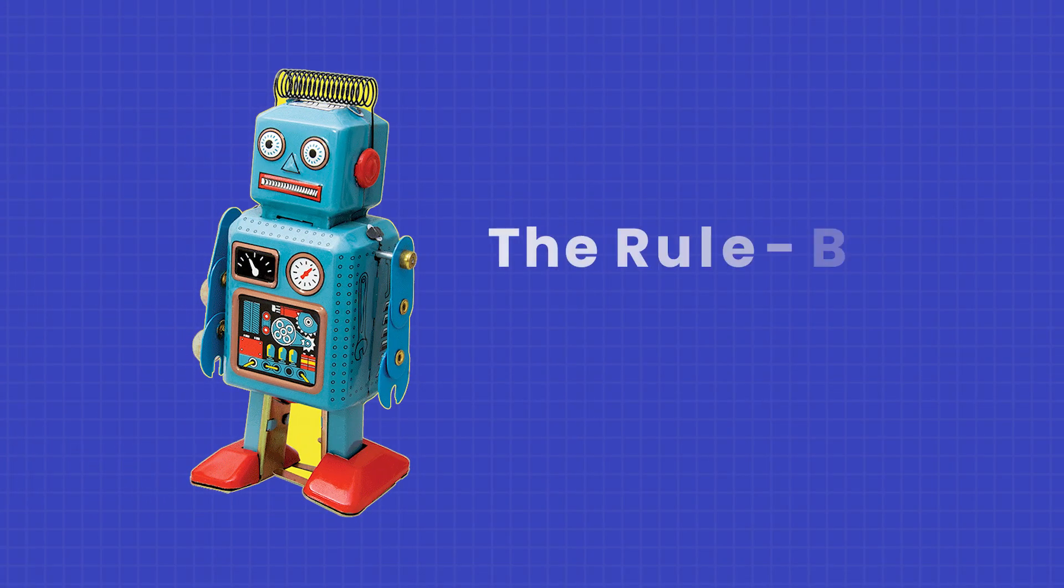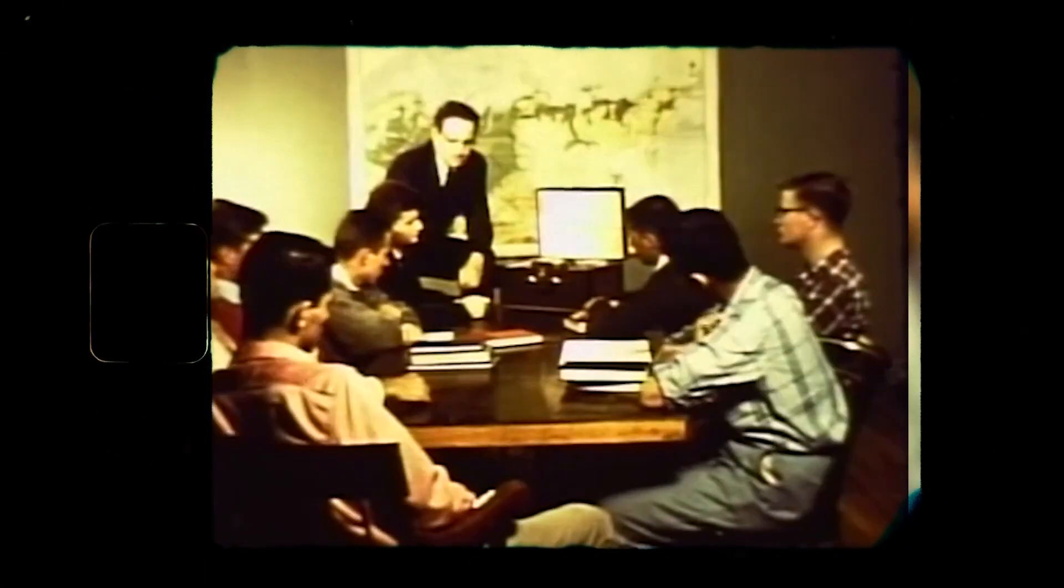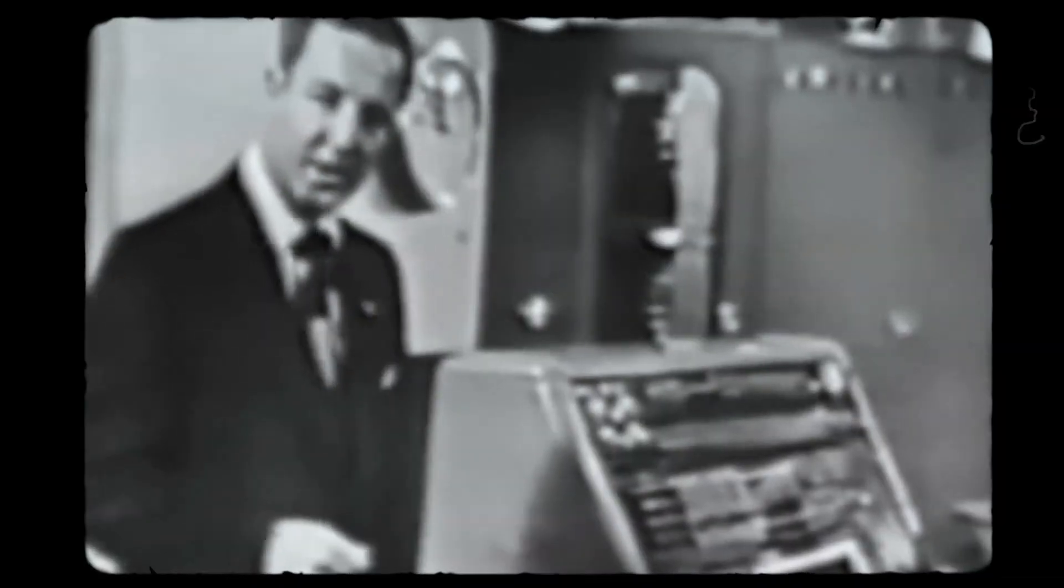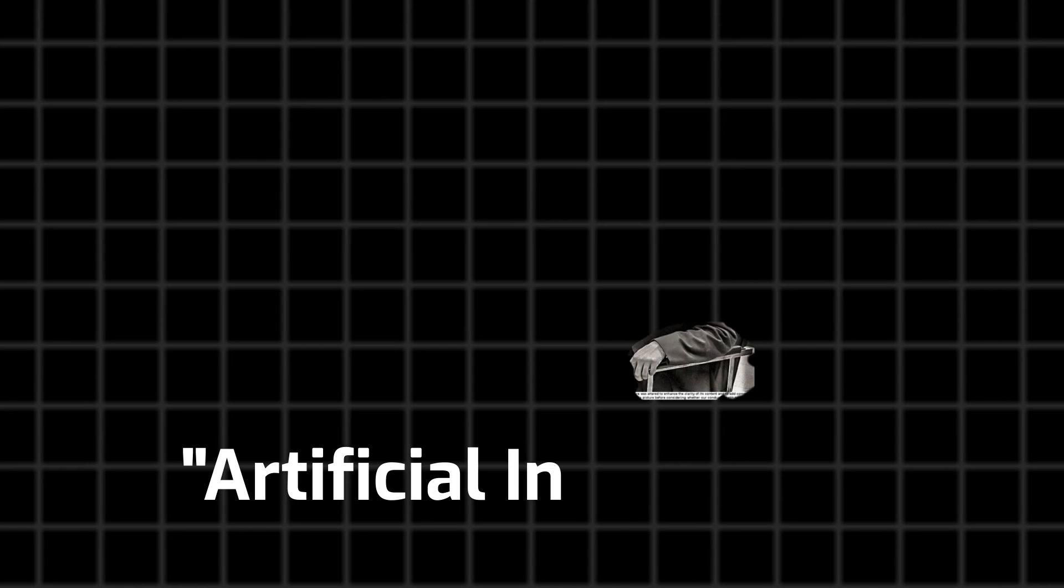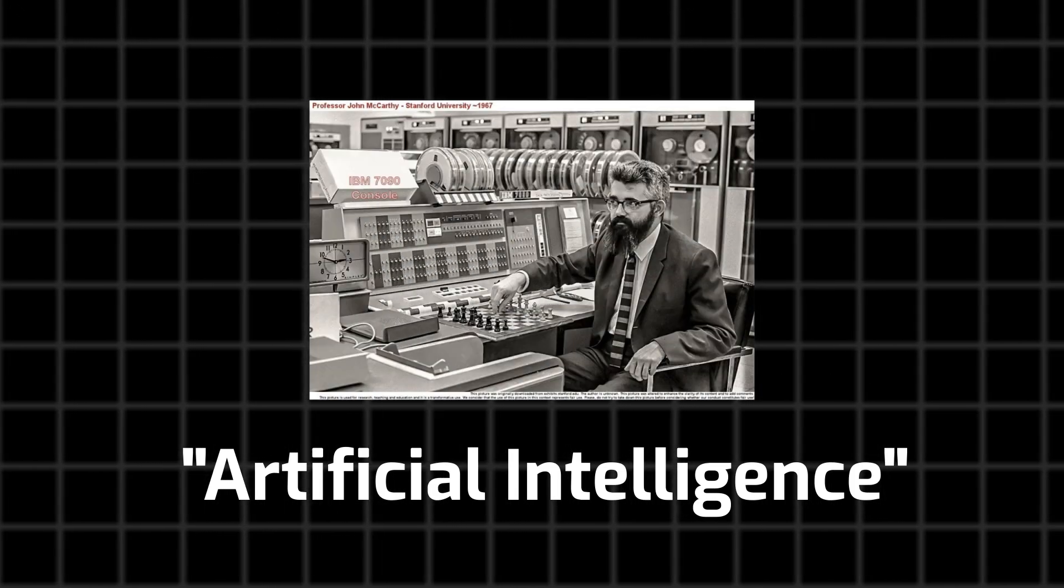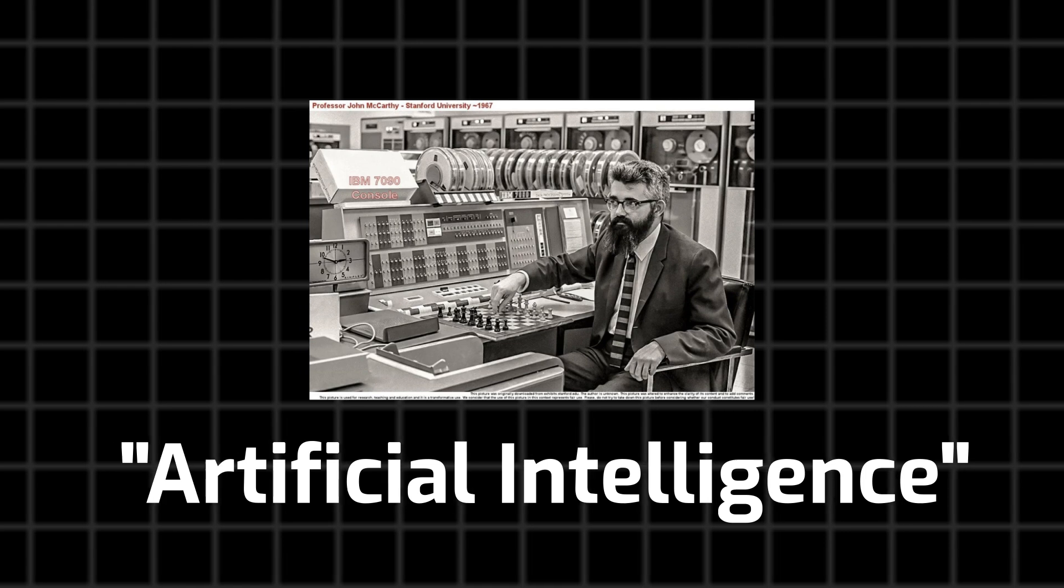Stage one, the rule-based AI. Back in the 1950s, AI was in its early stages. It could solve puzzles, play board games, and recognize simple patterns in data. Even microwaves and car radios rely on this type of AI. It was when McCarthy coined the weird and interesting term artificial intelligence. And this is where AI was born.